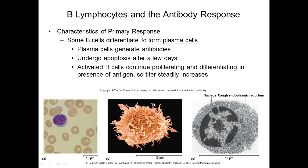Antibody titer is the concentration of antibody. One way to test immunity is to look at your titer — for example, during pregnancy they test your titer for diseases like rubella and chicken pox. If you've been vaccinated, you should have an antibody titer even if you never had the infection. These tests check to see if you've been vaccinated and if the vaccine worked.